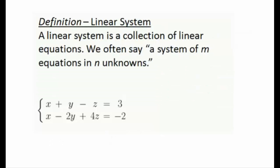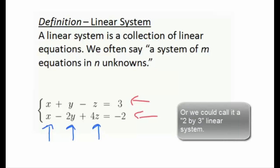In our course we're going to be working with linear systems. A linear system is essentially just a collection of linear equations — it could be two, three, or more. There are usually two important numbers we're after: the number of equations and the number of unknowns or variables. We call it an m by n system, or a system of m equations in n unknowns. For example, the system with equations x plus y minus z equals 3 and x minus 2y plus 4z equals negative 2 has two equations and three unknowns.